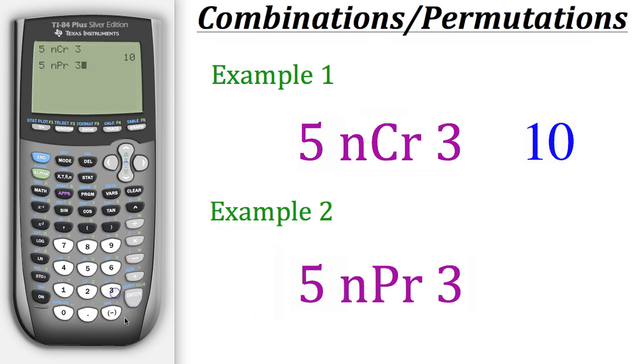Now we just need to put in three and when we hit enter the calculator will give us all the different possibilities for this permutation without any repetition which for our particular example would be 60 and that's how you calculate combinations and permutations on the calculator.